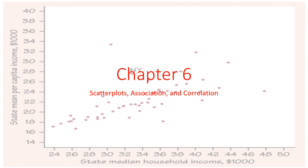Welcome back to chapter 6. This chapter starts the second unit of our course. In this part, we're going to be looking at scatter plots and what we can do from them: correlation, regression, making things linear, and then just scatter plots, which is what we're going to be looking at in this chapter — association and correlation.